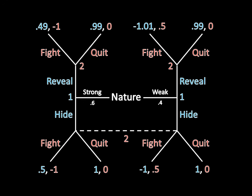If Player 1 reveals that information, Player 2 observes directly whether Player 1 is strong or weak, and chooses whether to fight or quit. This is the top half of the game tree. Player 2's incentives are structured such that it is a bad idea to fight a strong type, but a good idea to fight a weak type.